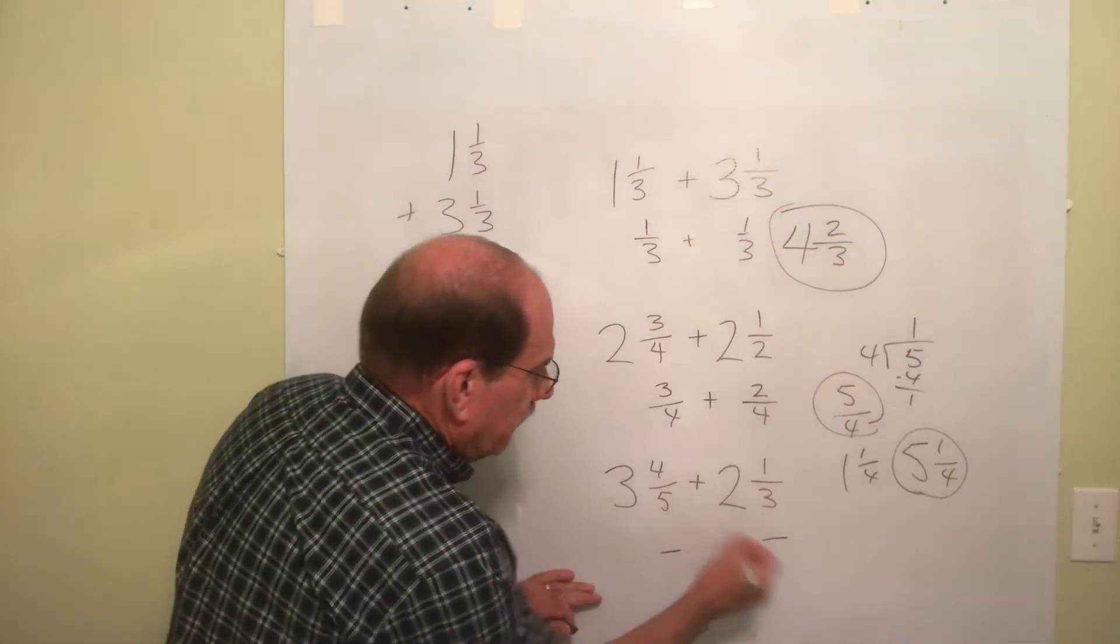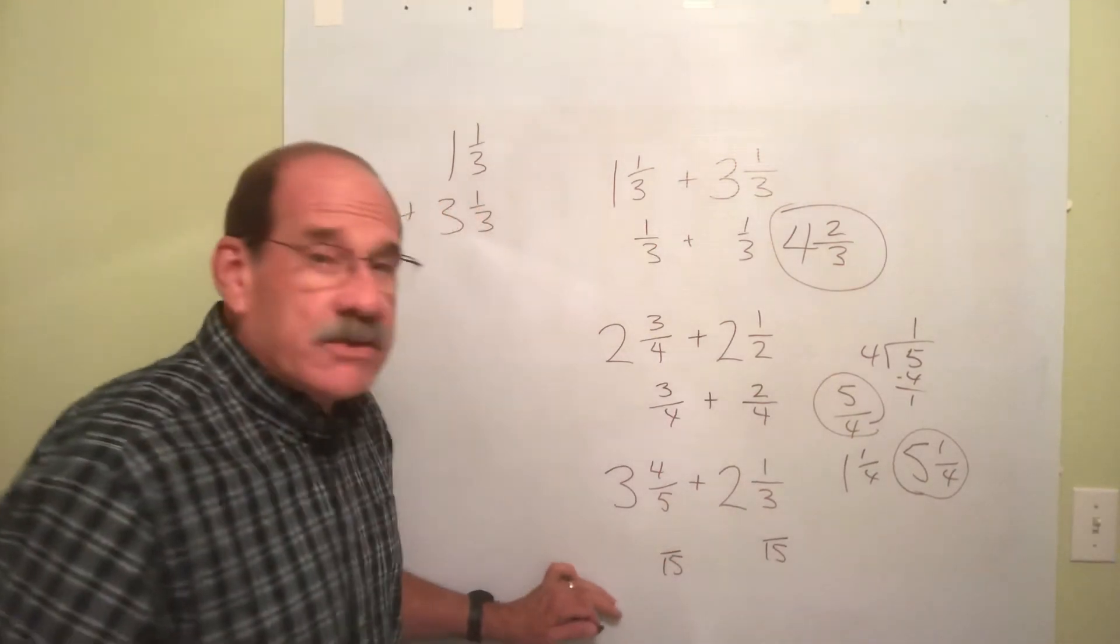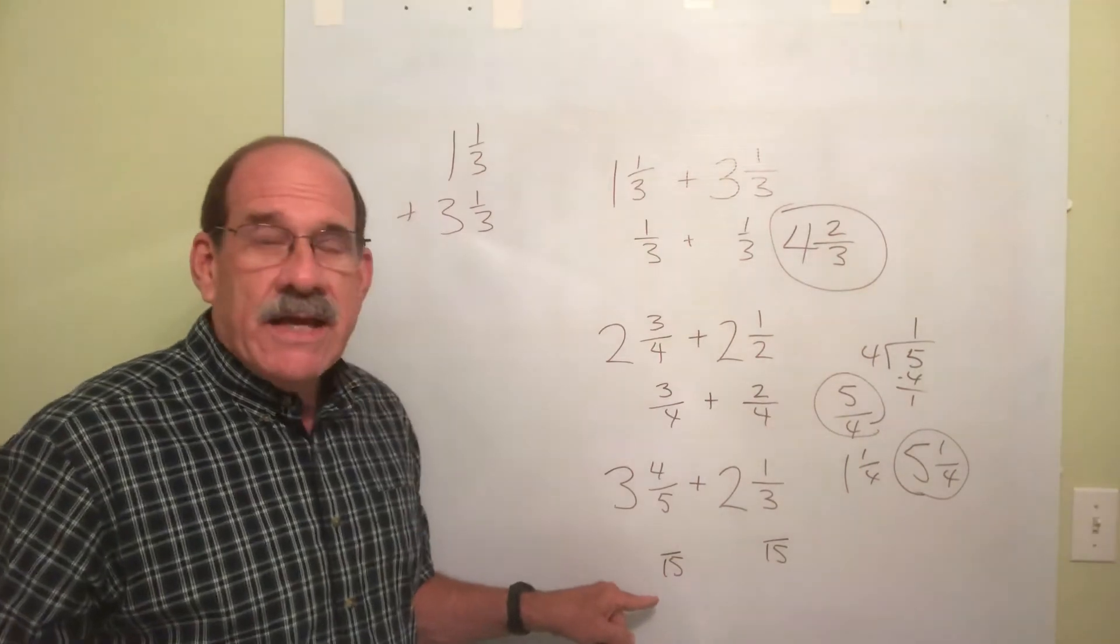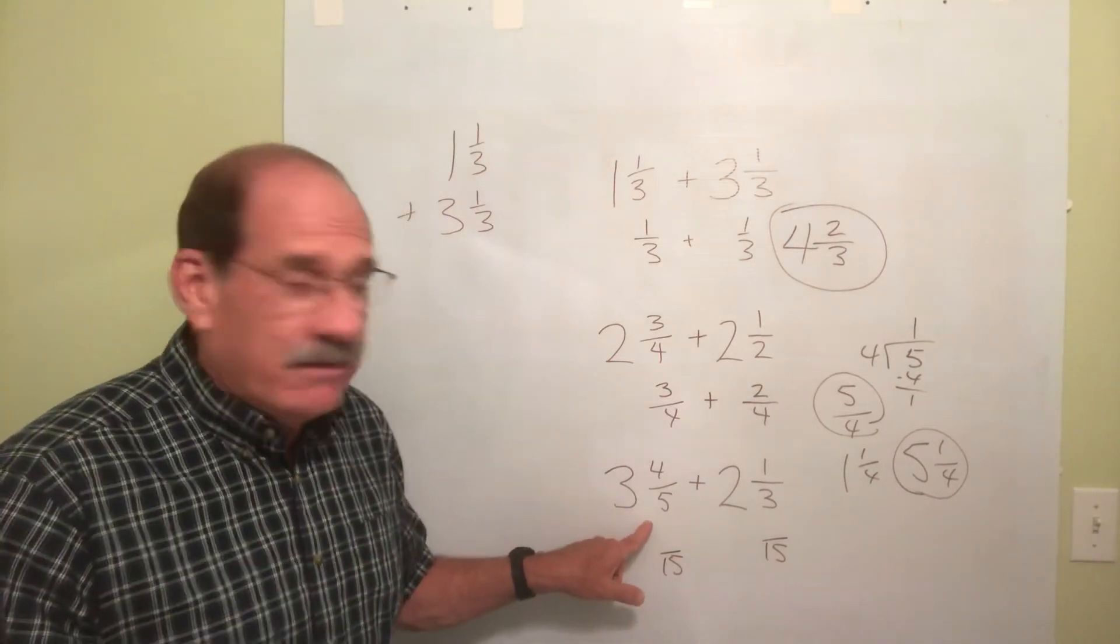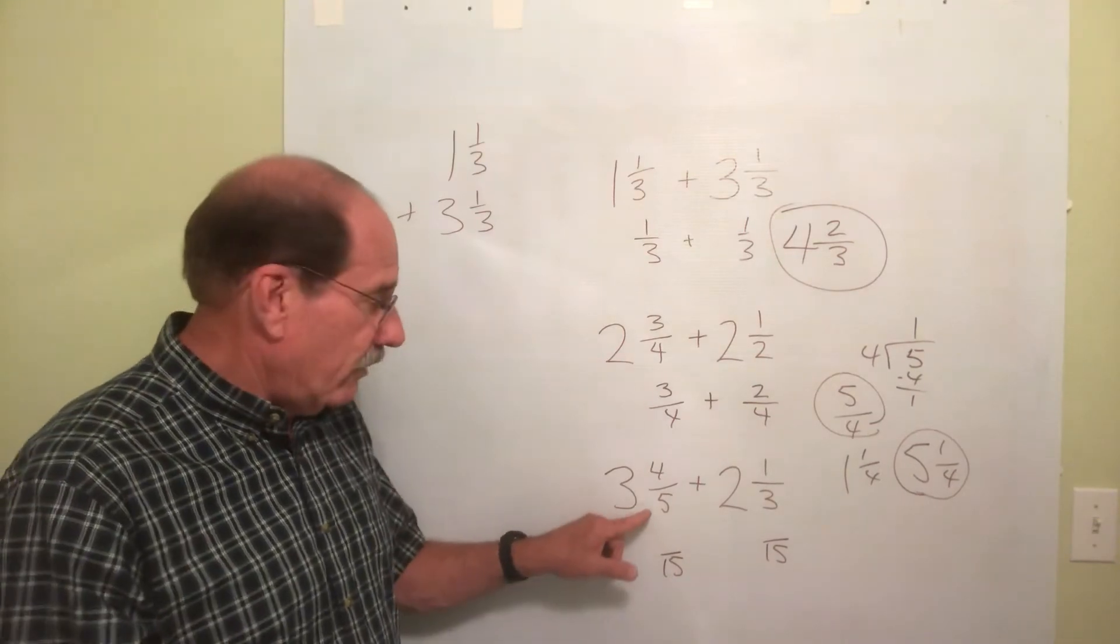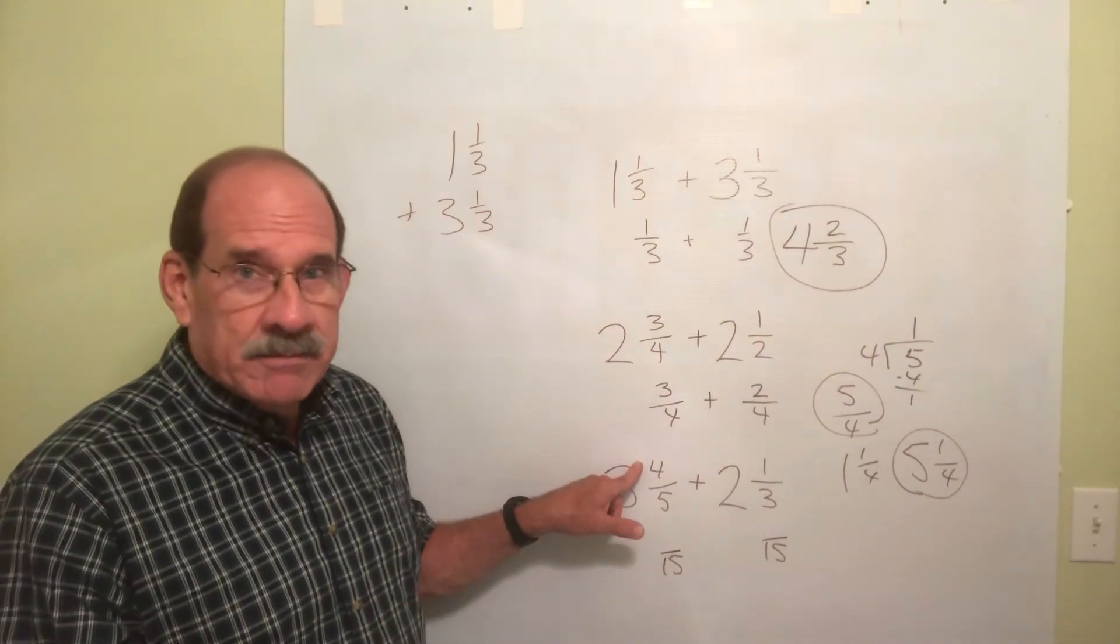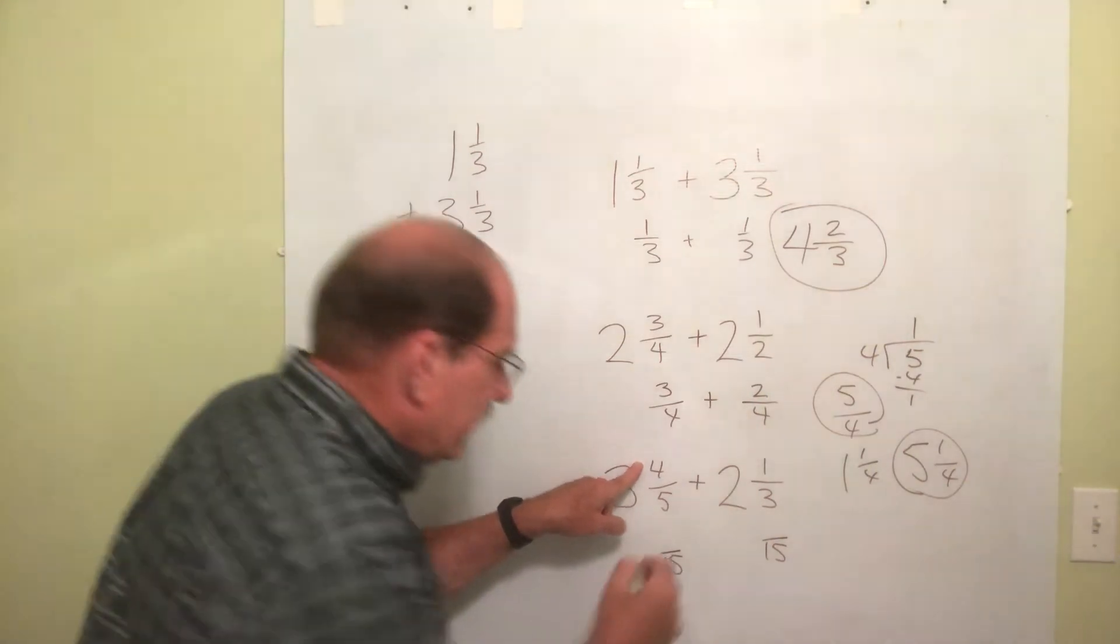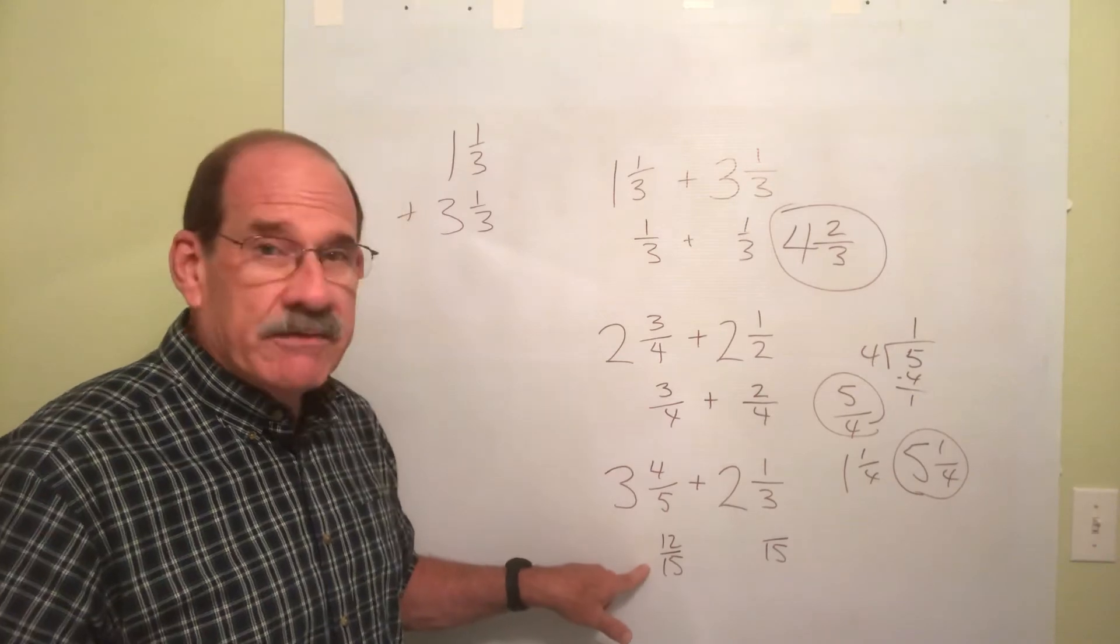What do you do to the 5 to make him into a 15? Well, you multiply by 3. The top number, 4, multiply him or her, whichever, by 3, that's 12. So 4 fifths becomes 12 fifteenths.